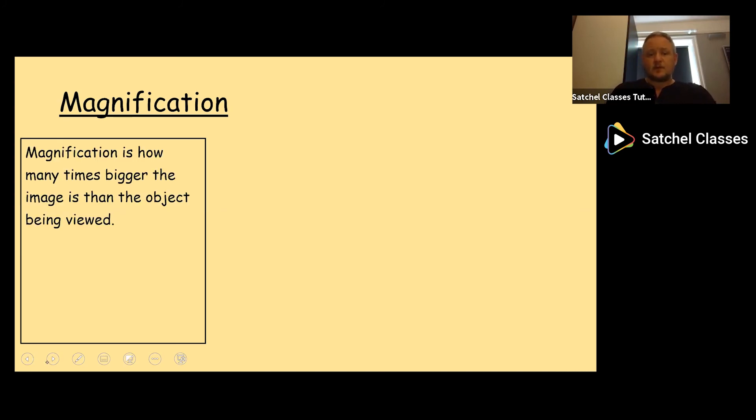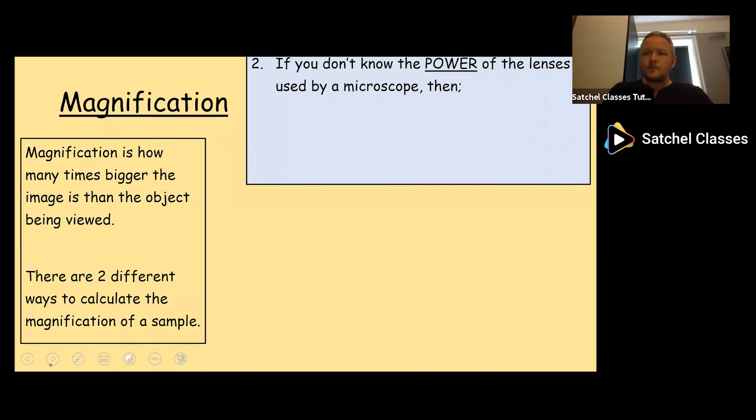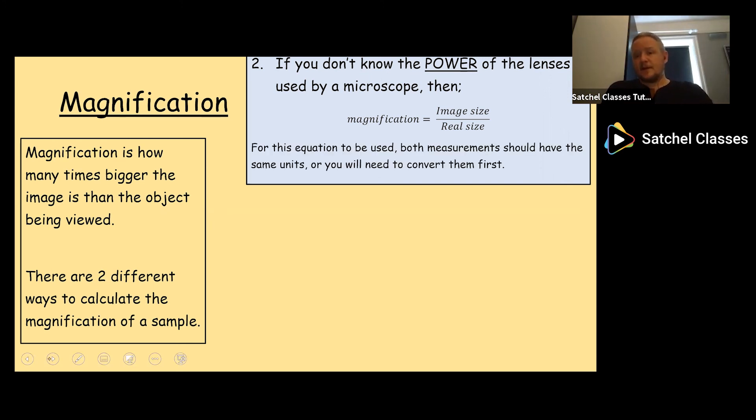But what about if we don't know the power of the lens? What if the question isn't obvious in terms of what the power of the lens is? Well in that case we need to be given some more information. For the second method, if you don't know the power of the lenses used by a microscope, then we should be given an image size and a real size in the question about magnification. This means we can use the equation magnification equals image size divided by the real size. But for this equation to be used, both the image and the real size measurement should have the same units. They should both be measured in millimeters or micrometers or nano or picometers. But if they're not then you will have to convert them first. If you don't you will get the wrong magnification.